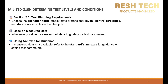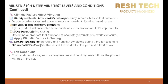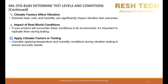Section 2.3 says you must choose your excitation form, levels, control strategies, and durations to replicate the life cycle. Whenever possible, base this on measured data. But if that is not feasible, you can use the standard's annexes for guidance. Focus on the following: steady state versus transient vibration, test durations, control strategies, and lab conditions such as temperature and humidity. Climatic factors such as extreme heat, cold, and humidity can drastically affect vibration outcomes, so if your real environment includes these conditions, consider applying them during the test.